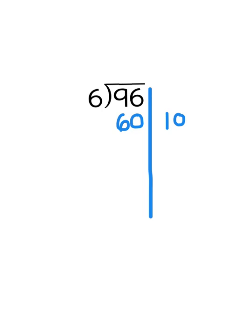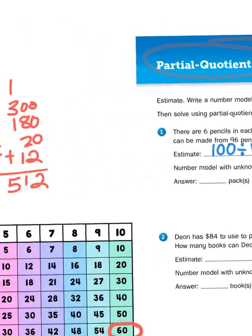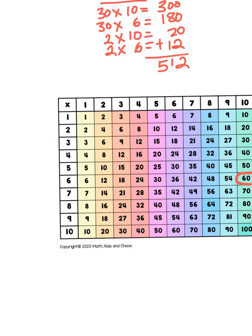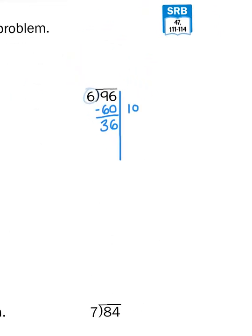I can divide 96 into 10 groups of 6 at least. There could be more. That's why it's called a partial quotient. Now what I need to do is I need to subtract. What is 96 minus 60? Well, that is 36. Now 36 is bigger than my divisor, 6. So that means I can probably get more groups of 6 out of it. Now 36 is also a multiple of 6 because 6 times 6 gives me 36. So that tells me I can get 6 more groups of 6 out of 96.